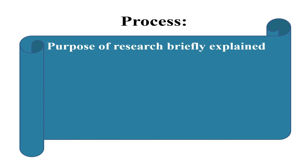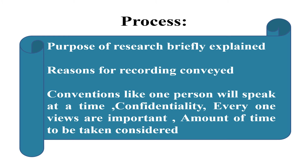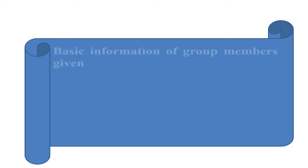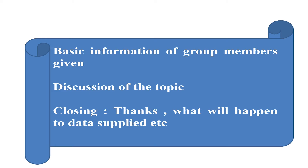Let's now discuss the process of the focus group method. First, the purpose of the research is briefly explained. Then the reasons for recording are conveyed. Conventions like one person will speak at a time, confidentiality, everyone's views are important, and amount of time are taken into consideration. Introduction — that is, the basic information of group members — is given. Then the participants discuss the topic among themselves. The last is closing and thanks, which includes a discussion of how data supplied will be handled.